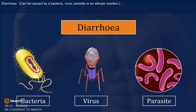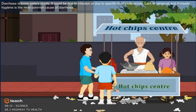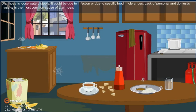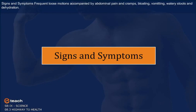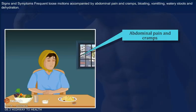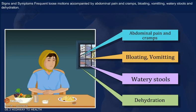Diarrhea can be caused by a bacteria, virus, parasite or an allergic reaction. Diarrhea is loose, watery stools. It could be due to infection or due to specific food intolerances. Lack of personal and domestic hygiene is the most common cause of diarrhea. Signs and Symptoms include frequent loose motions accompanied by abdominal pain and cramps, bloating, vomiting, watery stools and dehydration.